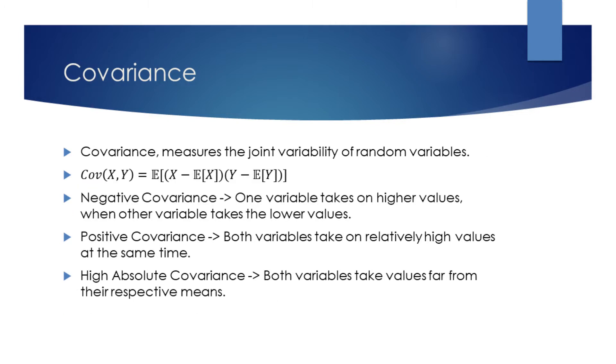Covariance measures the joint variability of random variables. The formula used for finding the covariance looks like finding the mean of the product of variances of two variables.